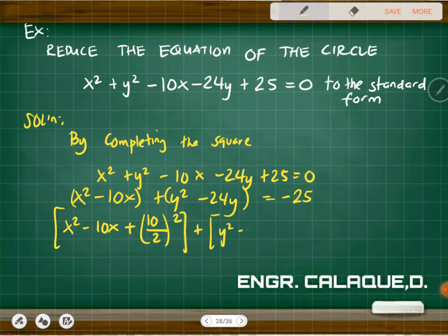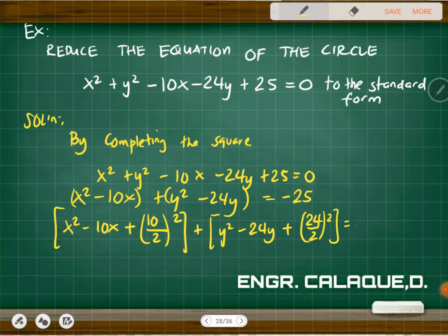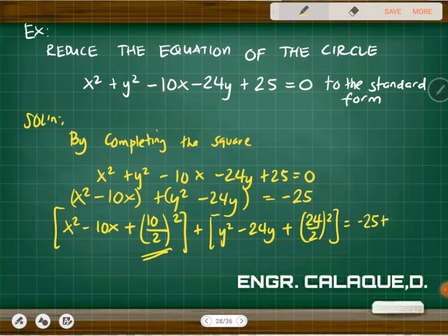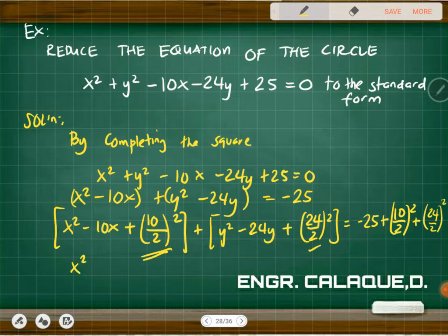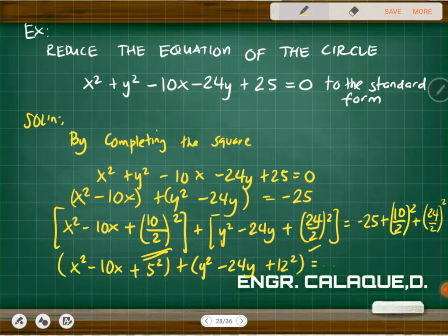For x squared minus 10x, add (10 divided by 2) squared. For y squared minus 24y, add (24 divided by 2) squared. So on the right side we have negative 25 plus (10 over 2) squared plus (24 divided by 2) squared. That gives us x squared minus 10x plus 5 squared, plus y squared minus 24y plus 12 squared, equals negative 25 plus 5 squared plus 12 squared.